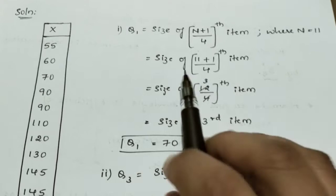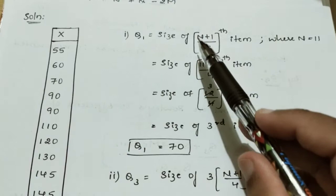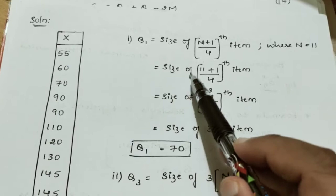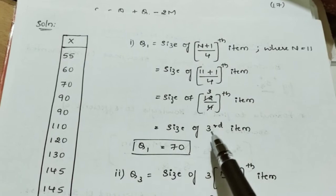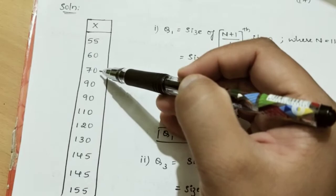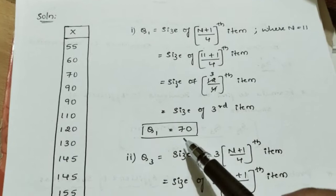To find Q1, we use the size of the (n+1)/4th item. Substituting n = 11: size of (11+1)/4 = 12/4 = 3rd item. The 3rd item is 70. So our Q1 value is 70.